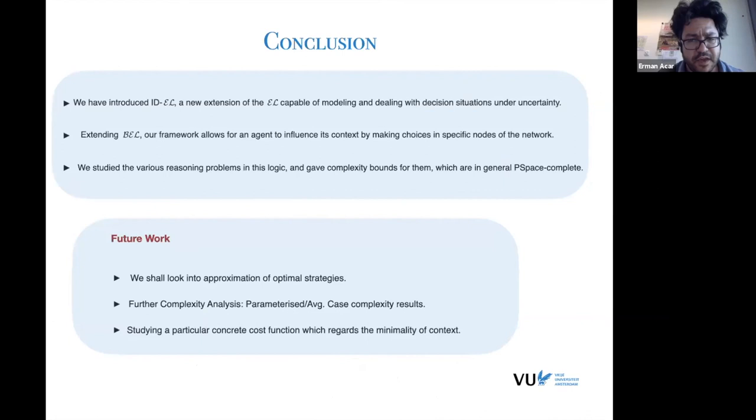And to wrap up, we introduced the new description logic, bringing decision-making under uncertainty. It just extends BEL from the past. And we studied some of its reasoning problems and studied its complexity. For future work, we are thinking about looking for approximating these strategies and also maybe parameterized complexity would be in place. And that could be also interesting to look at some realistic cost functions that take, for instance, minimality of the ontology into account. Thank you very much.